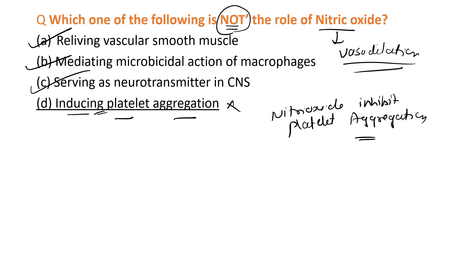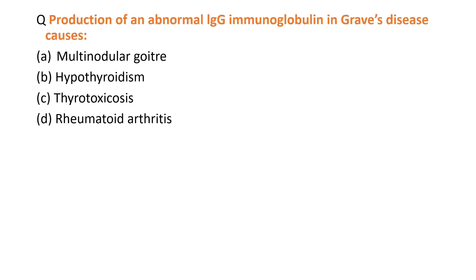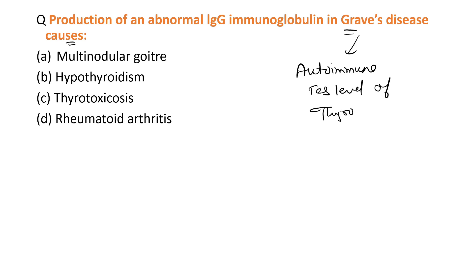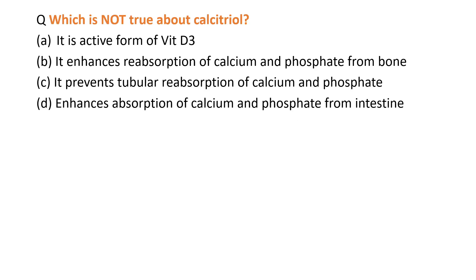The next MCQ: production of an abnormal IgG immunoglobulin in Graves' disease causes what? Graves' disease is an autoimmune disease in which our own immunity causes an increase in the level of thyroid hormone. When thyroid hormone level increases, it causes thyrotoxicosis. So the answer is option C.